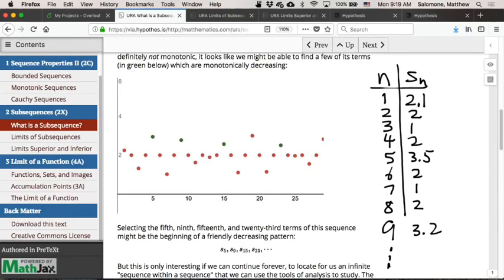Then choosing a subsequence means that I'm just going in and I'm cherry-picking some terms. So the first term in my subsequence is the fifth term in my parent sequence. The second term in my subsequence is the ninth term in my parent sequence, and so on. So I'm just cherry-picking, I'm just selecting some of the terms of the original.